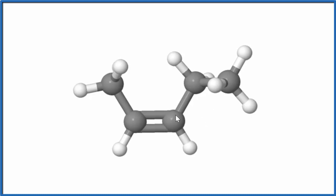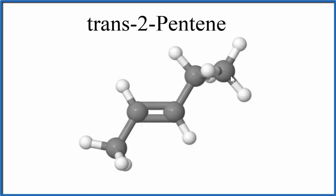If we had trans, they'd be on opposite sides. That would look like this. Here again, it's 2-pentene because on the second carbon here we have the double bond, but now this methyl group and then the ethyl group, they're on opposite sides. So this is a trans isomer of 2-pentene.